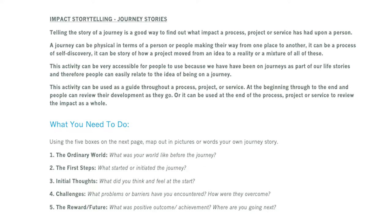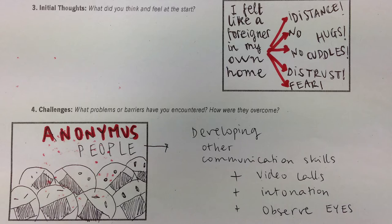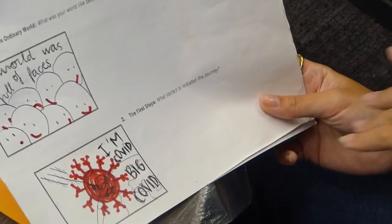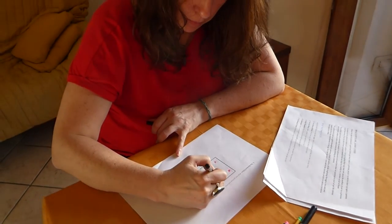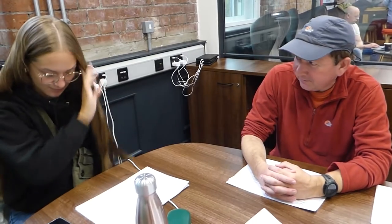The Journey Stories activity is a simple but effective way to gather stories from people, to discover how they are feeling in the present and for them to reflect upon the distance they have traveled. It's an interesting and creative way to record and measure impact using the structure of a narrative or series of events. This activity can be done as a one-to-one or conducted as part of a group. It can be a creative way to get a group discussing an issue or an event that has affected them, for example COVID.